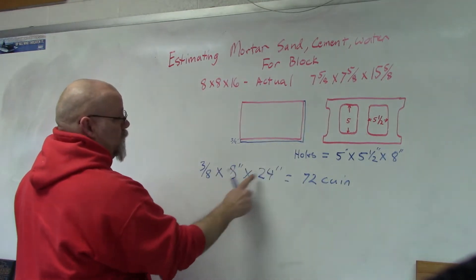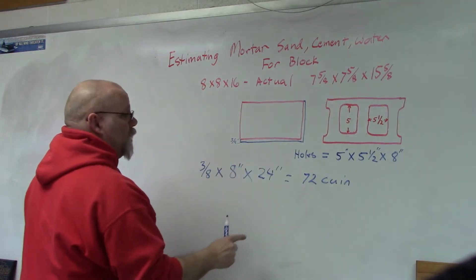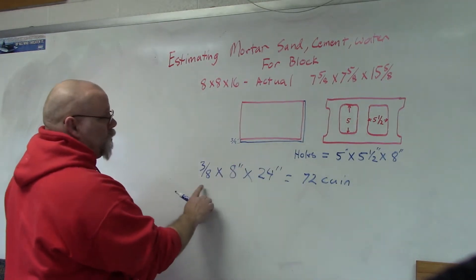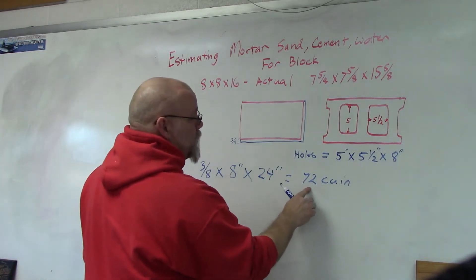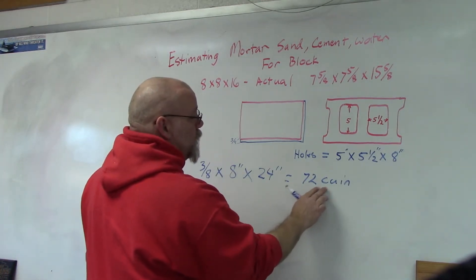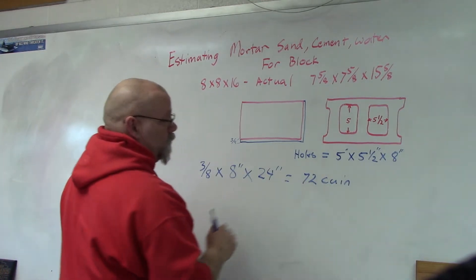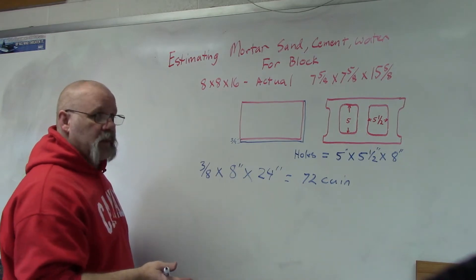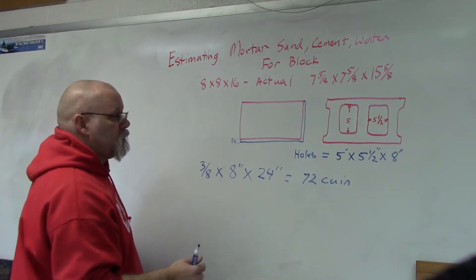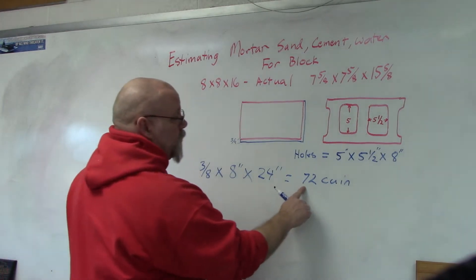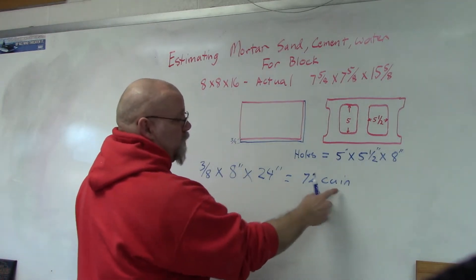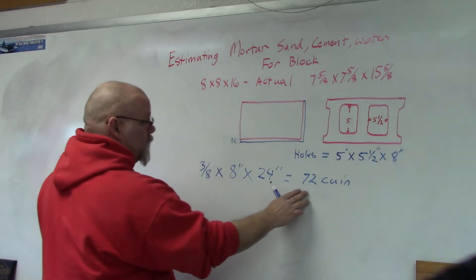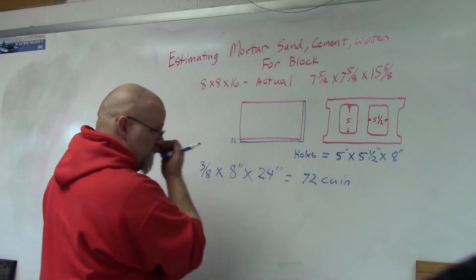Because these are inches, inches, inches — for one block I need 72 cubic inches of mortar, which is mostly made up of sand. Pretty much what we're figuring here is the amount of sand that we're going to use: 72 cubic inches of sand per block.